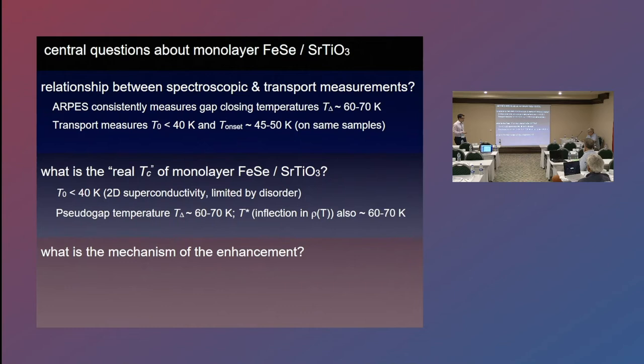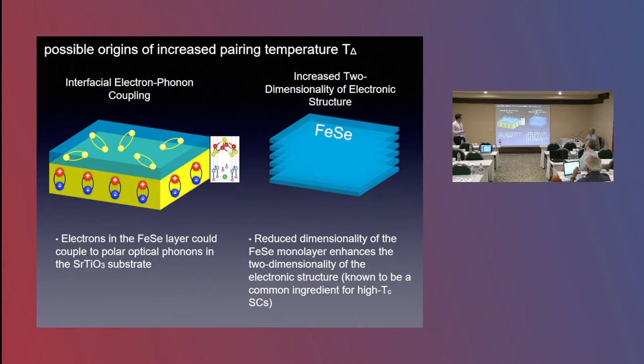So I want to speculate now on what might be enhancing TC in monolayer iron selenide beyond the bulk-doped variants of iron selenide. There's two possibilities I want to discuss, both of which I believe are relevant. One is interfacial electron-phonon coupling, the original idea, kind of similar to this original idea by Little and Ginsburg and others. And the other is the increased two-dimensionality of the electronic structure when we go down to the monolayer limit.